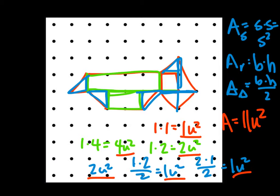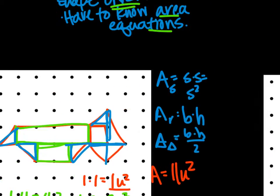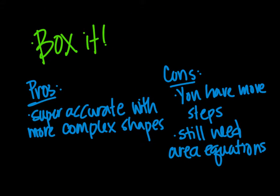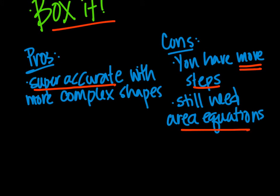Our very last method that we're going to look at is not just breaking up the shapes, but something a little bit more complex. It requires us to look beyond the shape. We're going to use the box it method. Boxing the shape allows us to be super accurate with more complex shapes. But its cons are it has more steps than the other two, and we still need those area equations.